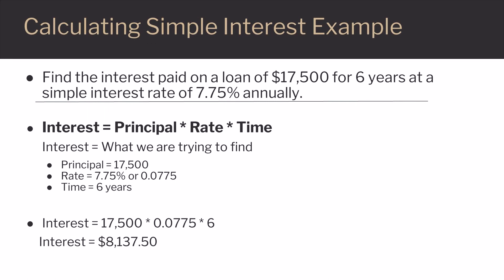Plug in the numbers for principal, rate, and time from the example. Remember to change the rate from a percentage to a decimal by dividing by 100. Principal is $17,500, rate is 7.75% or 0.0775, and time is 6 years. Multiply $17,500 times 0.0775 times 6 to get $8,137.50. This is the total amount of interest that will be paid on this loan.